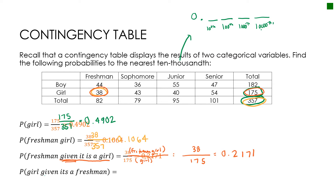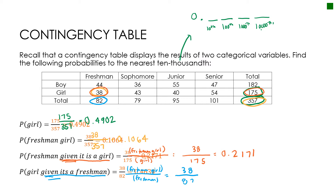Last one: probability of girl given it's a freshman. Same idea — I still have freshman girl on top. On the bottom, because it says given it's a freshman, it's the number of freshman. So freshman girls on top is 38, and total freshman on the bottom is 82. When I divide, I get 0.4634.